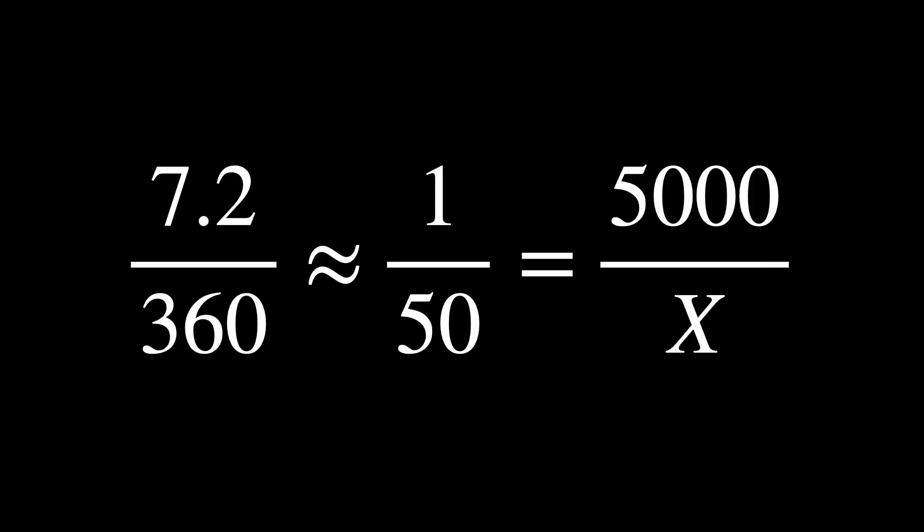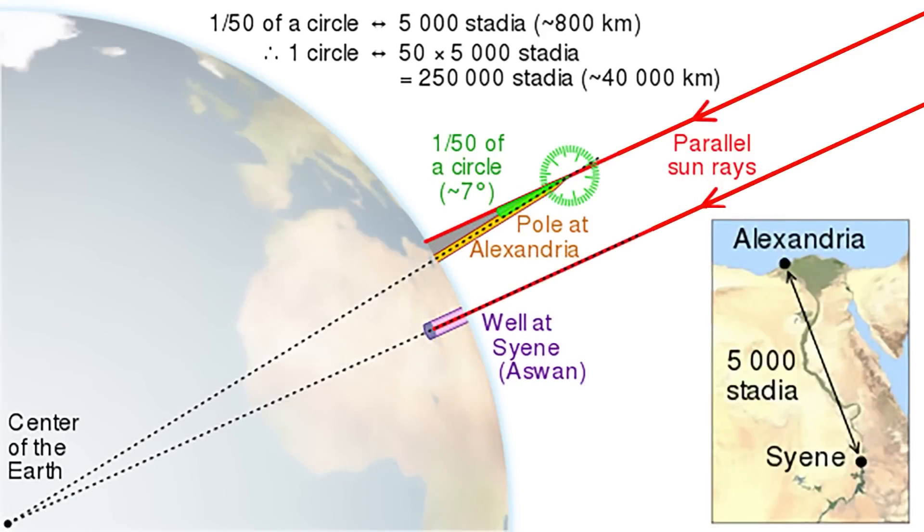So the length of the arc was 5,000 stadia, and the circumference of the Earth is what we're trying to discover. If we have 7.2 divided by 360, and that's equal to 5,000 divided by your number, then that works out to be about 250,000 stadia. More specifically, seven degrees is about 1/50th of 360. 5,000 stadia times 50 is about 250,000 stadia.